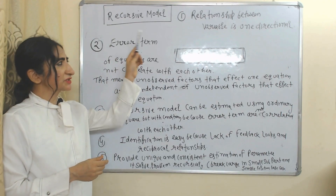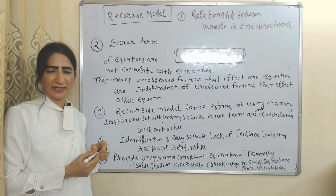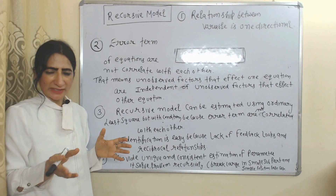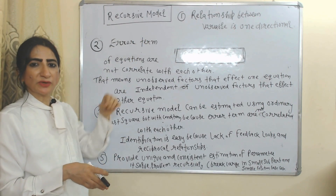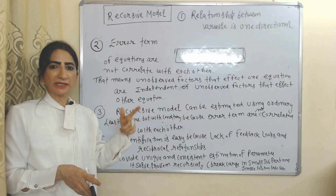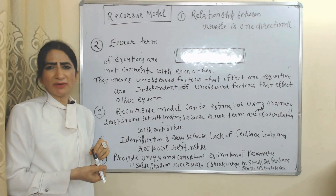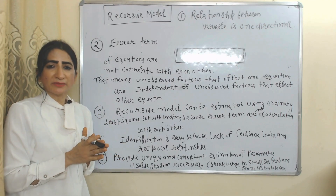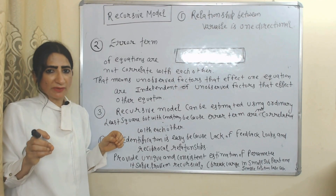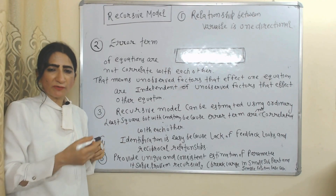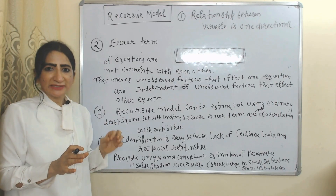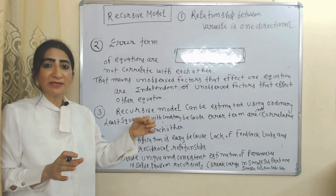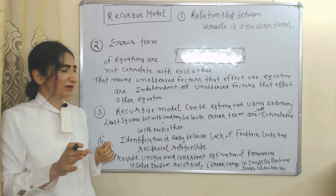In the case of a recursive model, the relationship between variables is one-directional — no feedback loop, no reciprocal influence. Error terms of equations are not correlated with each other. This means the unobserved factors influencing one equation are independent from the unobserved factors influencing other equations.